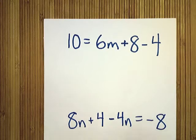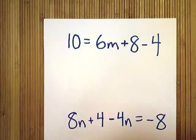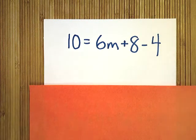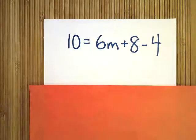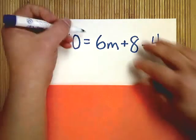The first one we're going to do is 10 equals 6m plus 8 minus 4. So if we're going to follow the stream of logic that we've been working with, the first step is draw the line. So we're going to draw a line down the equal sign right here.